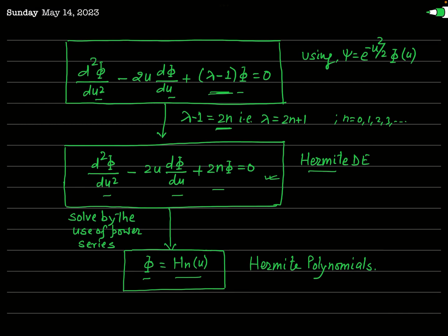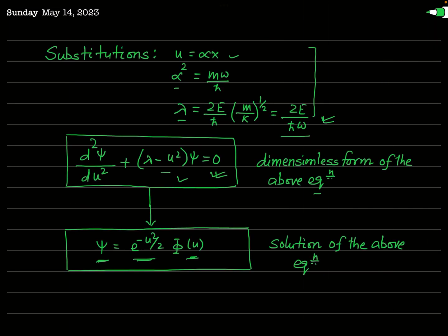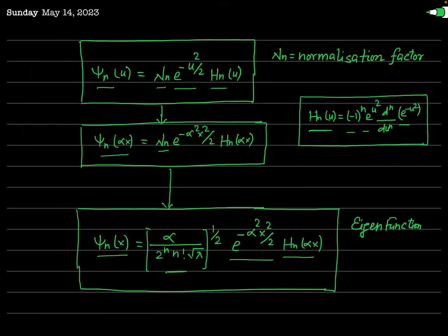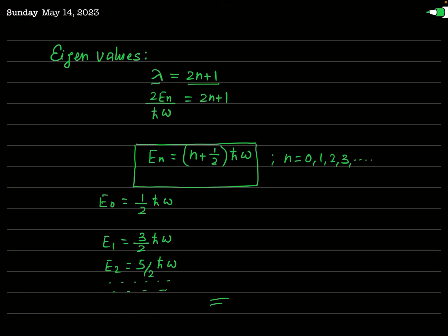Now we obtain the energy eigenvalues. From the condition λ = 2n + 1 and the definition λ = 2E/(ℏω), we write 2Eₙ/(ℏω) = 2n + 1, which gives Eₙ = (n + ½)ℏω. Substituting n = 0 gives E₀ = ½ℏω, which is called the ground state energy or zero-point energy. This means the minimum energy of a linear harmonic oscillator is not zero but ½ℏω.